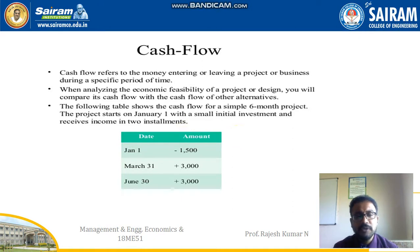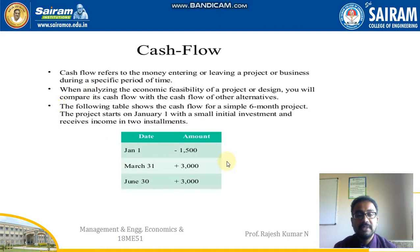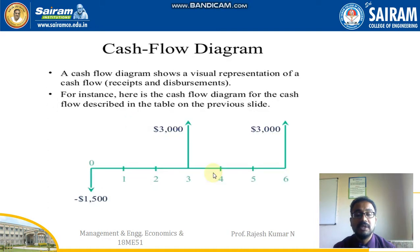First of all, what is cash flow? Cash flow refers to the money either entering or leaving a project or business during a specific period of time. When analyzing the economic feasibility of a project or design, you will compare its cash flow with the cash flow of other alternatives. This particular table shows the cash flow for a simple six-month project. The project starts on January 1 with a small initial investment and receives income in two installments. On January 1, money is paid out, so it is minus 1500. On March 31, money is received, so it is plus 3000, and again on June 30, plus 3000.